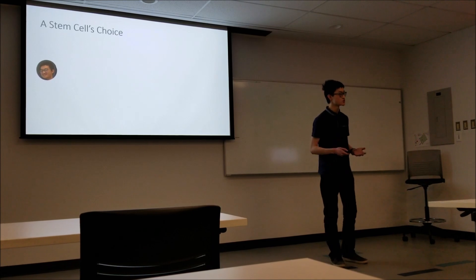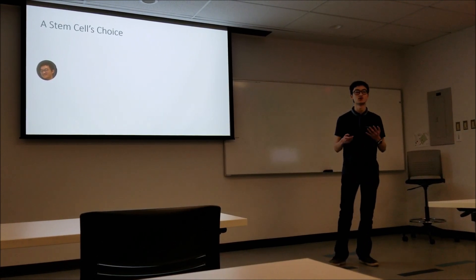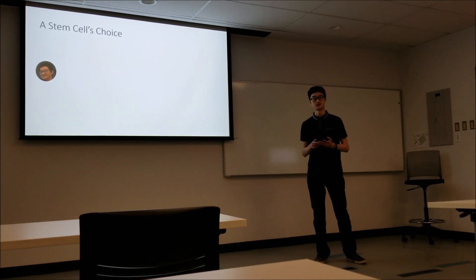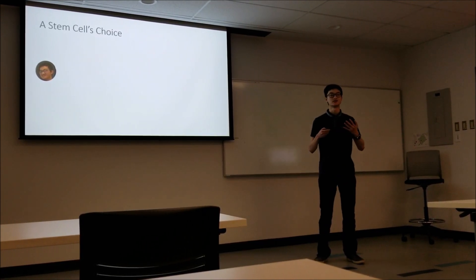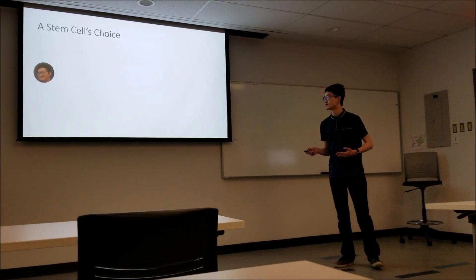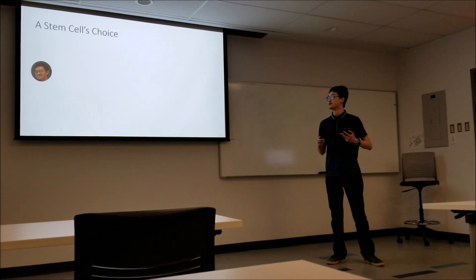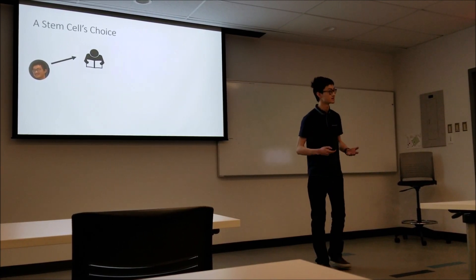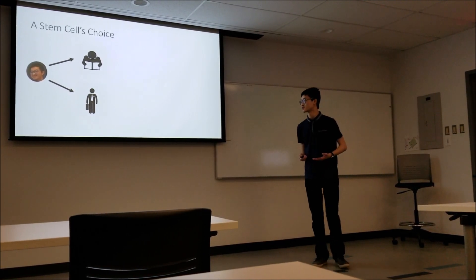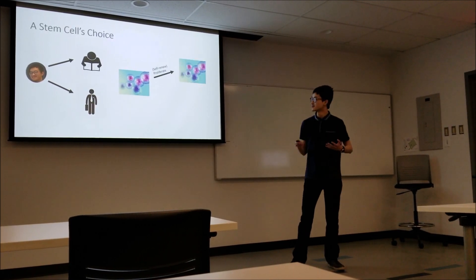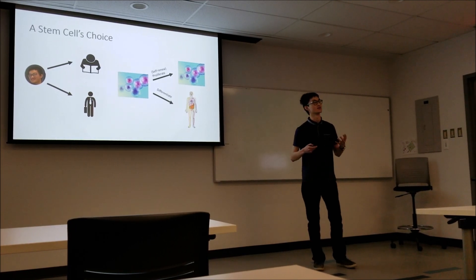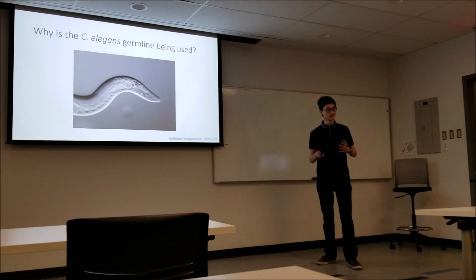One of the choices that stem cells need to make that's very critical to their development is whether the stem cell stays as a stem cell or differentiates towards a committed fate. To illustrate this concept, I have my favorite model organism, Dan the undergrad. Dan the undergrad has two choices: he can either self-renew and stay as a student, or differentiate down a committed career path. This is a very difficult choice. I really empathize with stem cells because they also have a difficult choice if they want to self-renew or differentiate.